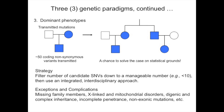The least tractable paradigm is, counter-intuitively, the traditional dominant multi-generational inheritance pattern, because it generates so many non-synonymous variants in the proband that you can't really limit the number of candidates based on biological and literature principles. The situation changes if you have additional family members available — if so, we take on these cases, otherwise we don't.